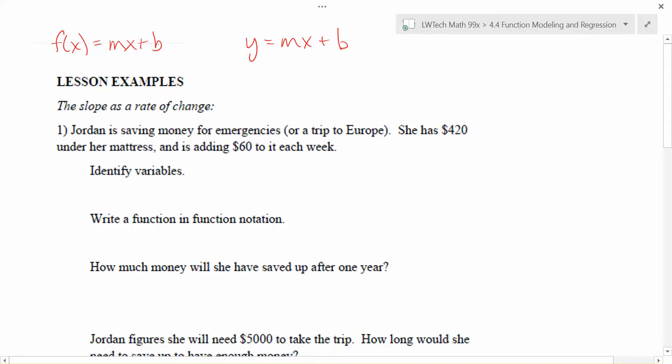So as we go through and take a look at problems, let's take a look at example number one here. Here we have Jordan is saving money for emergencies or a trip to Europe. She has $420 under her mattress and is adding $60 to it each week. In this particular case, if you wanted to try to write an equation or to think about how you could figure out how much money that Jordan had at any given point in time, she started with that $420.